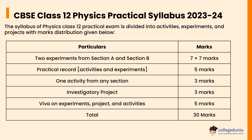The syllabus of Physics Class 12 practical exam is divided into activities, experiments, and projects with the marks distribution as follows: two experiments from Section A and Section B will carry 7 plus 7 marks; practical record of activities and experiments will carry 5 marks; one activity from any section will carry 3 marks; investigatory project will carry 3 marks; and viva on experiments, project, and activities will carry 5 marks.